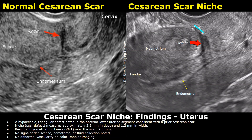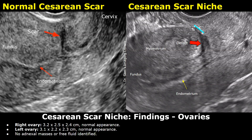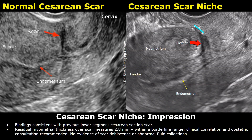Findings of the cesarean scar niche: a hypoechoic triangular defect noted in the anterior lower uterine segment, consistent with a prior cesarean scar. Niche measures approximately 3.5 mm in depth and 1.2 mm in width. Residual myometrial thickness over the scar is 2.8 mm. No signs of dehiscence, hematoma, or fluid collection noted. No abnormal vascularity on color Doppler imaging. The ovaries are normal. Impression: findings consistent with previous lower segment cesarean section scar. Residual myometrial thickness of 2.8 mm, within a borderline range. Clinical correlation and obstetric consultation recommended. No evidence of scar dehiscence or abnormal fluid collections.